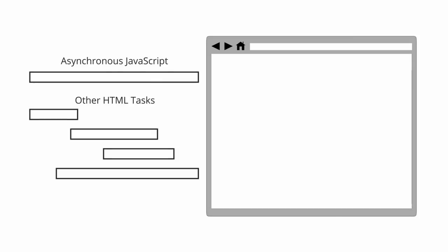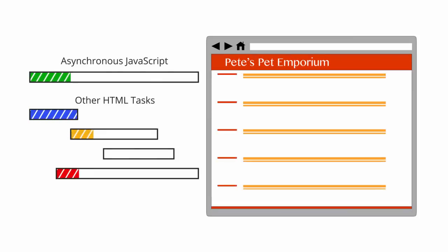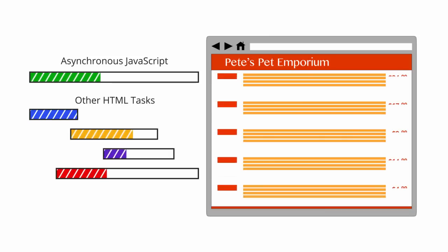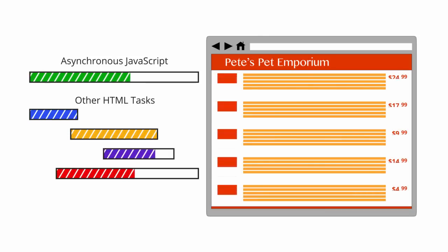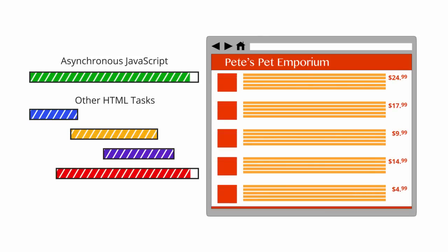The Google Analytics tracking code executes JavaScript asynchronously, meaning that the JavaScript runs in the background while the browser performs other tasks. This is very important. It means that the Google Analytics tracking code will continue to collect data while the browser renders the rest of the web page.